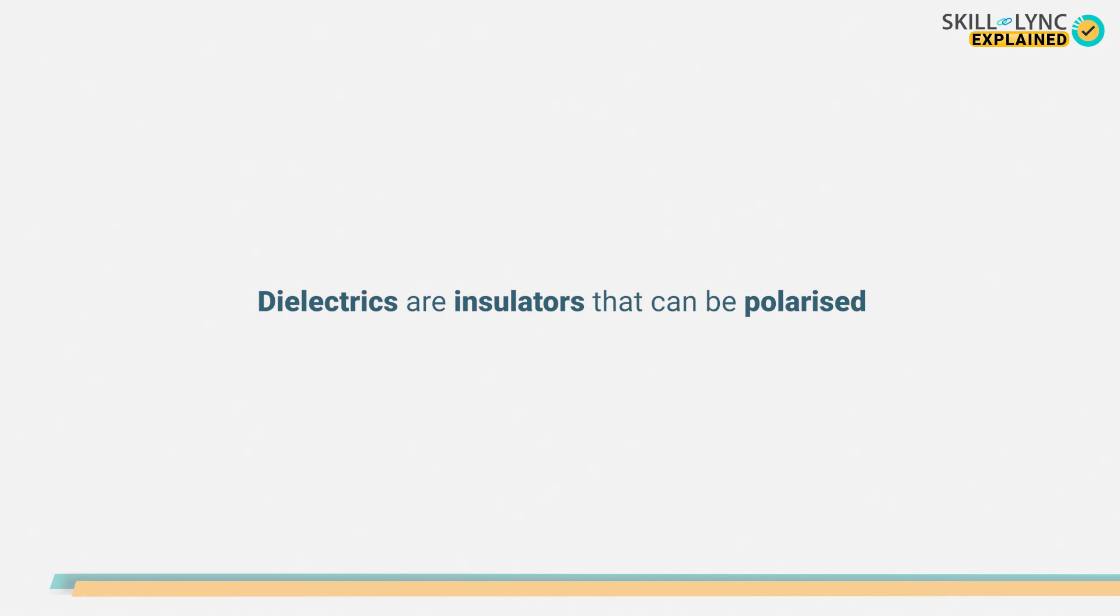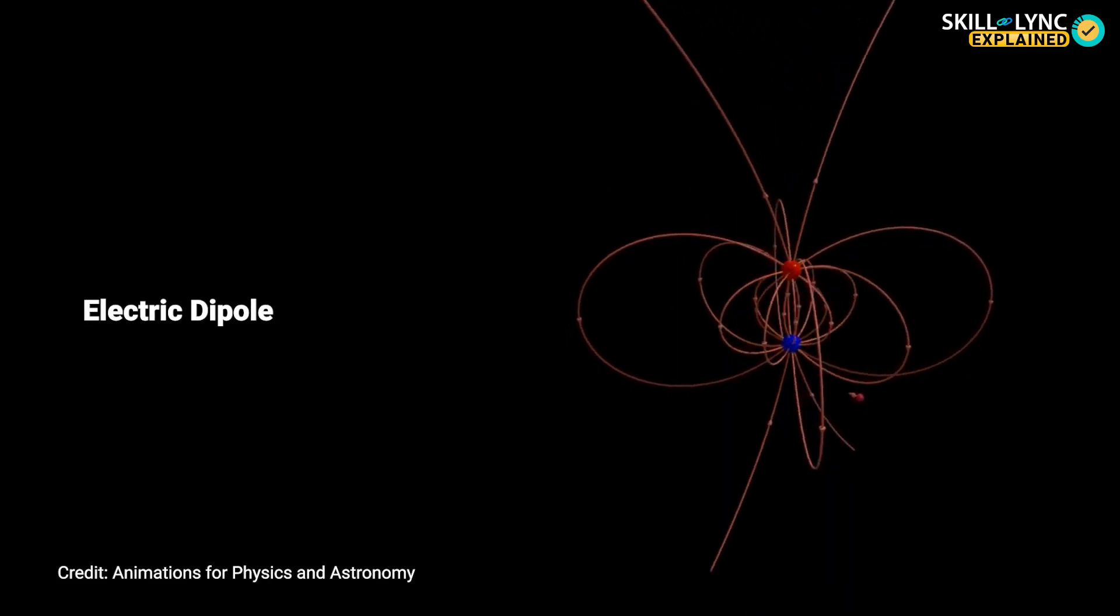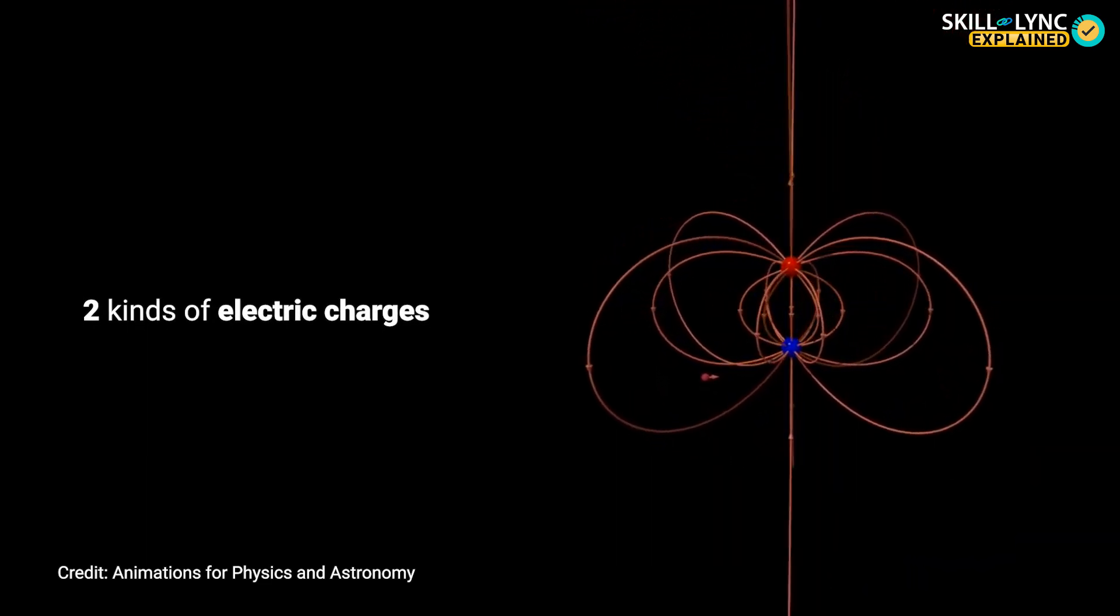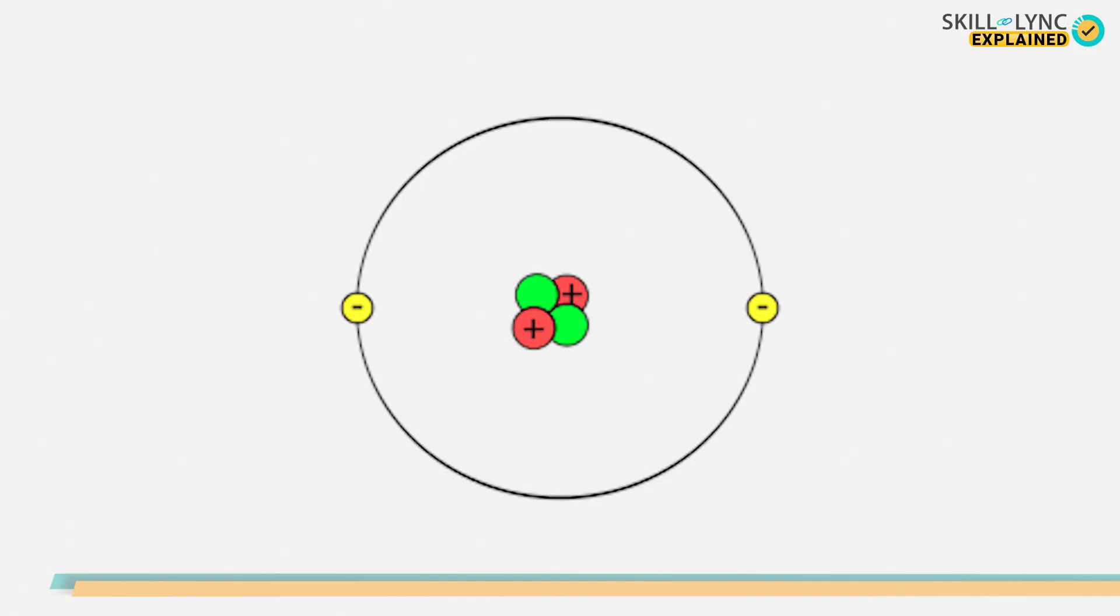To make it clear, let's first understand what an electric dipole is. As we know, there are two kinds of electric charges: one is positive and the other is negative. All matter is made of atoms that constitute of a positively charged nucleus and negatively charged electrons.